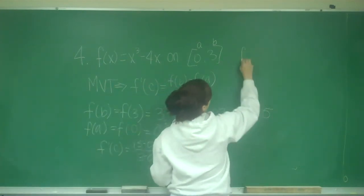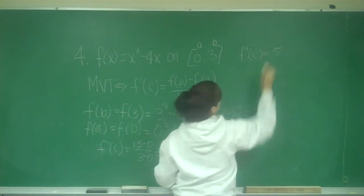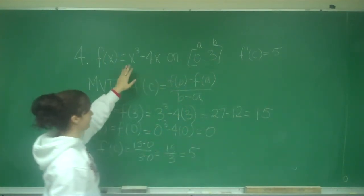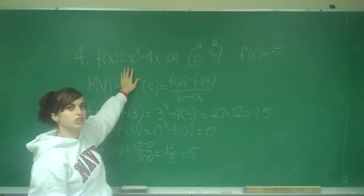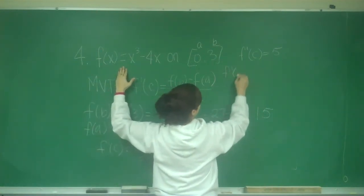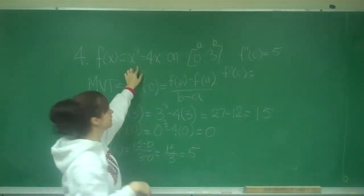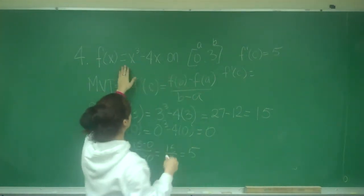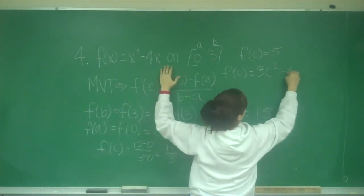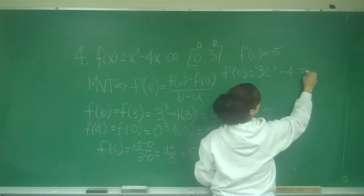I now have f prime of C equals 5, but they want us to find C, so we need to find the derivative of this function and set it equal to 5. So f prime of C — replacing x with C — gives us 3C squared minus 4, and this is going to be equal to 5.